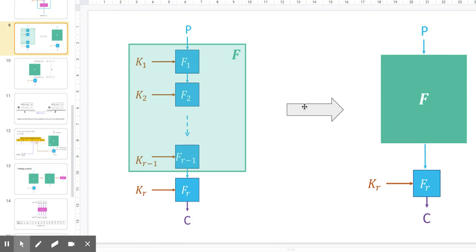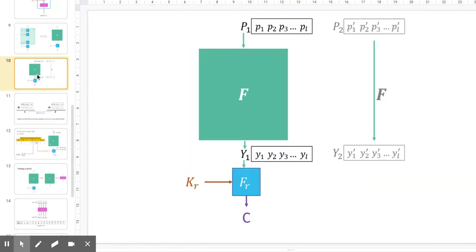Hello, this is Prabal Dev. After we have considered the transformation that F1 through Fr-1 be denoted by a single block F, we will have something which looks like this.